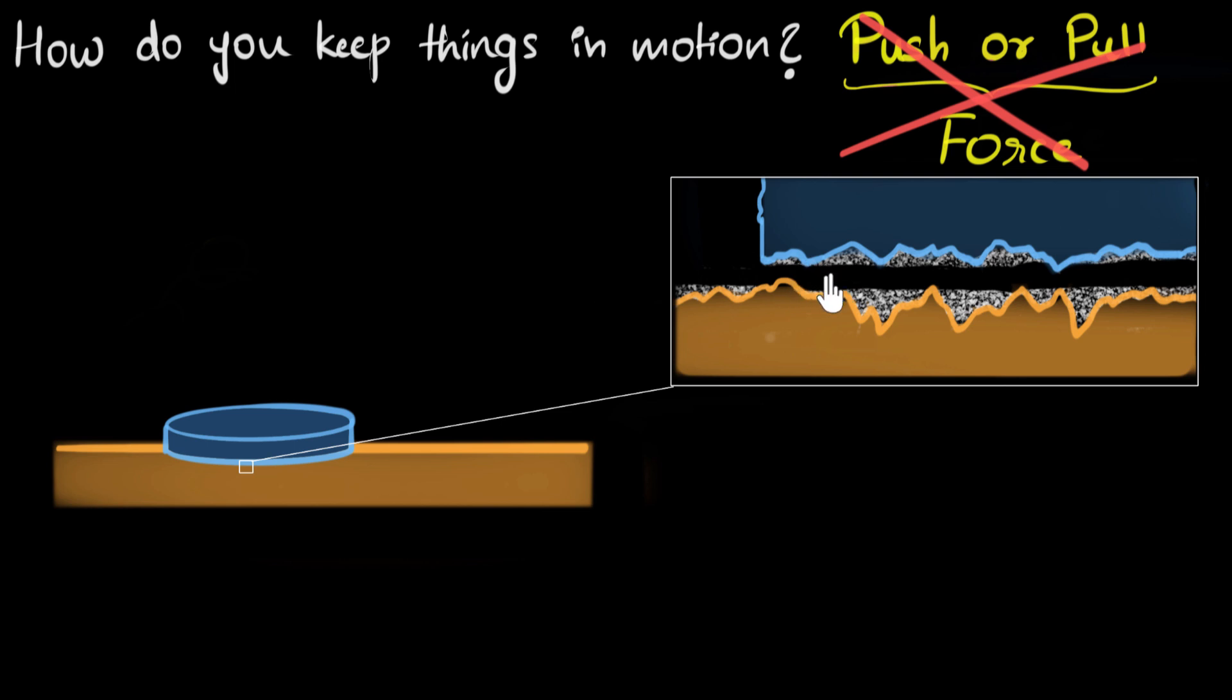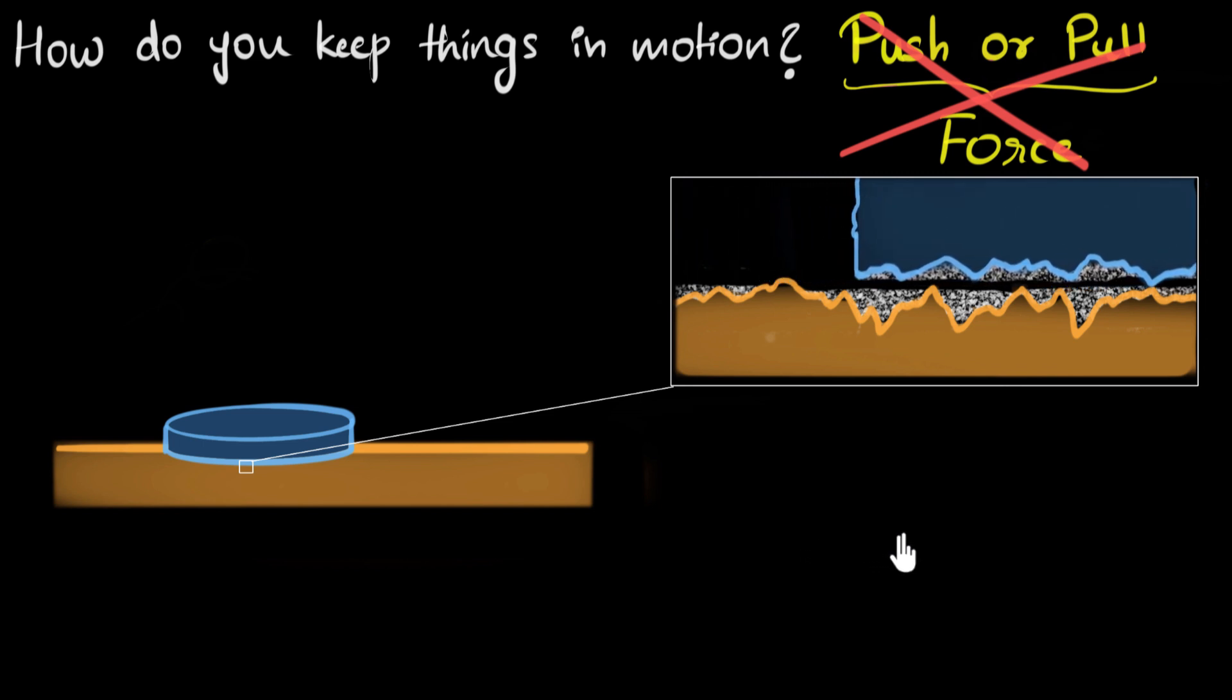Ah, now because the surfaces are much smoother than before, the striker can slide with much lesser obstruction. And that means friction reduces.